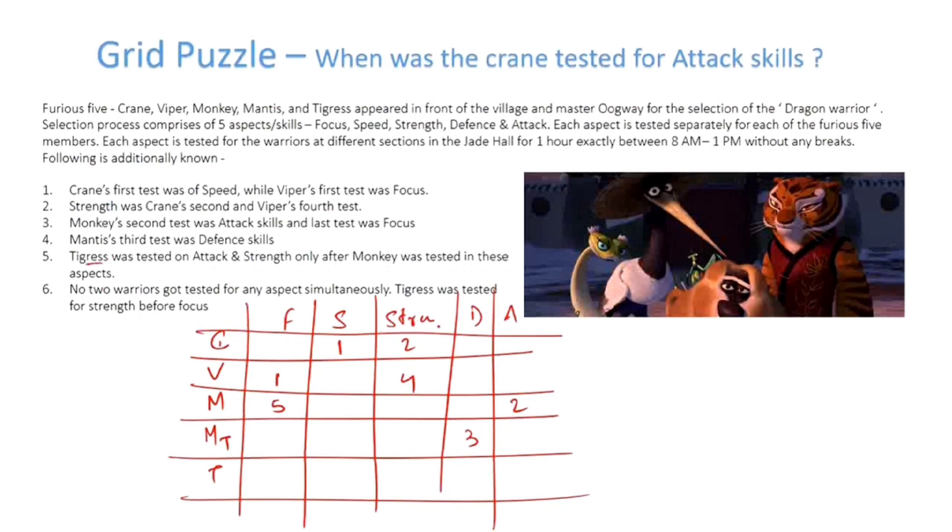We know that Tigress was tested on Attack and Strength only after Monkey was, which means this cannot be 1, this cannot be 1. They were tested only after Monkey. So if this is not 1, this is not 1. It cannot be 1 because there is 1 in this column. This cannot be 1.